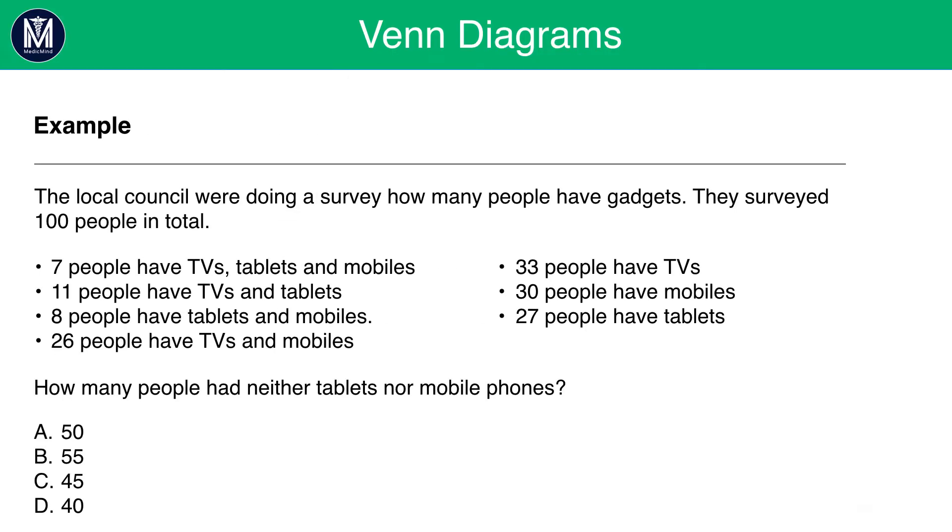An example. The local council were doing a survey of how many people have gadgets. They surveyed 100 people in total. 7 people have TVs, tablets and mobile phones. 11 people have TVs and tablets. 8 people have tablets and mobiles. 26 people have TVs and mobiles. 33 people have TVs. 38 people have mobiles. And 27 people have tablets. How many people have neither tablets nor mobile phones? Have a go.